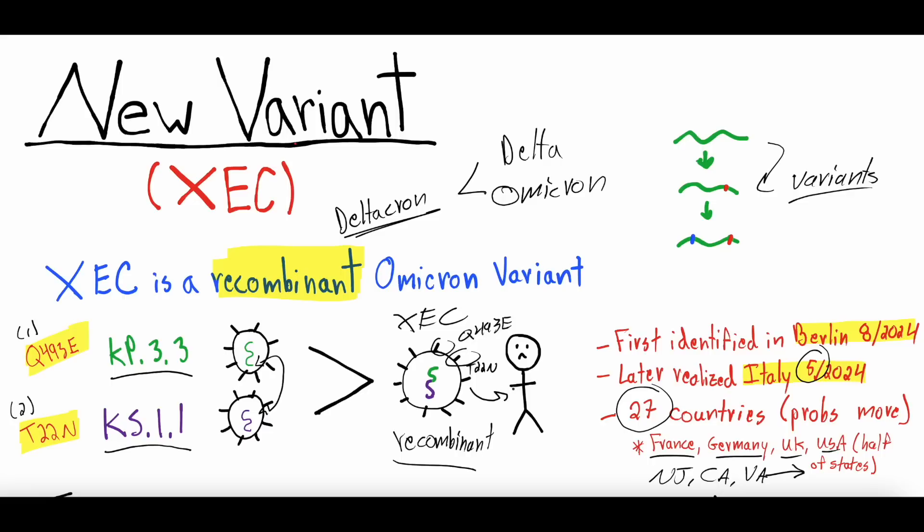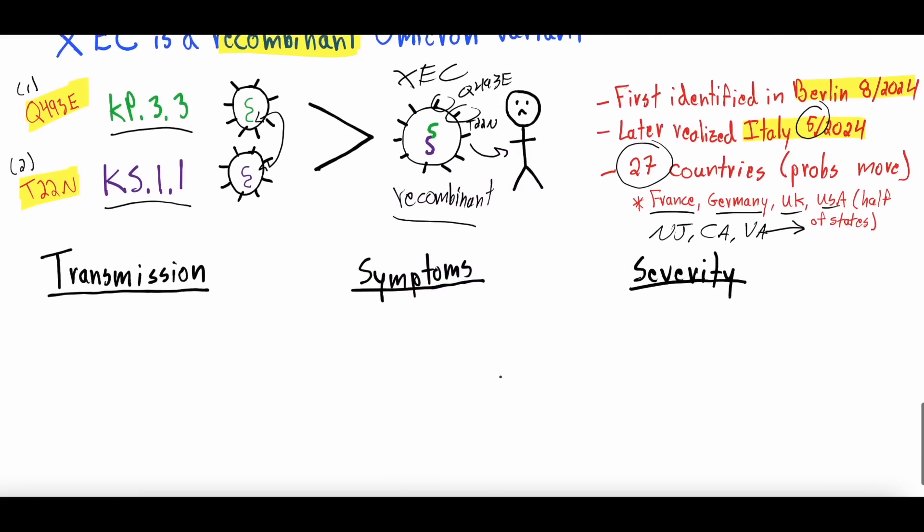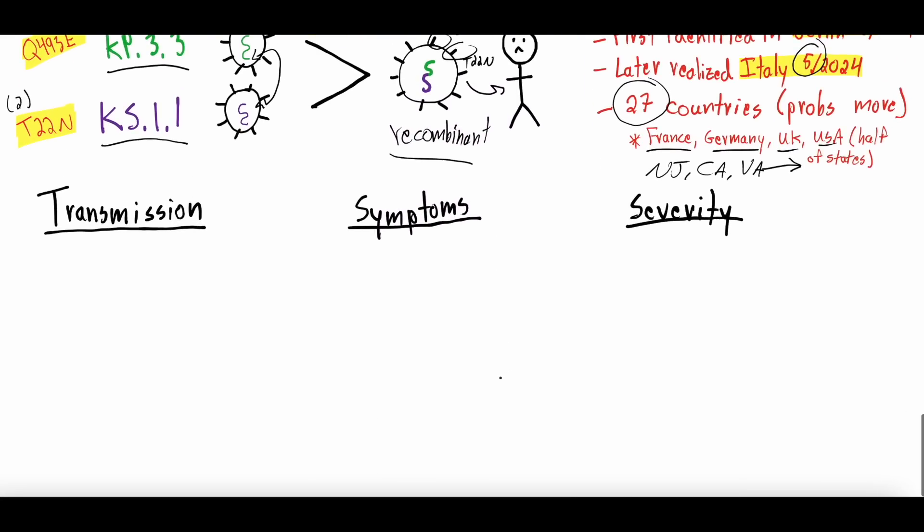So the question always becomes, do we care? Does it cause different symptoms, more severe symptoms, people get sicker, something like that? And the answer is that it seems to not cause any more severe disease than preceding variants. Certainly, we don't know that for sure. There's no way to know for sure. But the transmission does seem to be increased based on those mutations and some modeling that's been done, which is why we think it probably will become the dominant variant circulating this winter. We've seen cases double in different countries. The UK cases of XEC doubled. We've seen it spread obviously into half of the states in the US. But the symptoms seem to be about the same as the other variants.